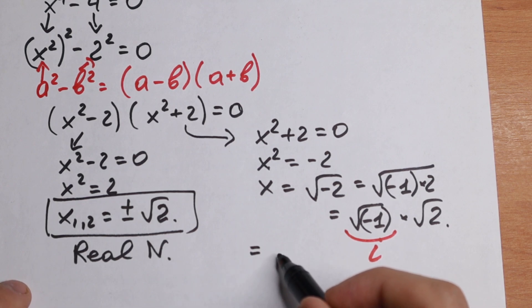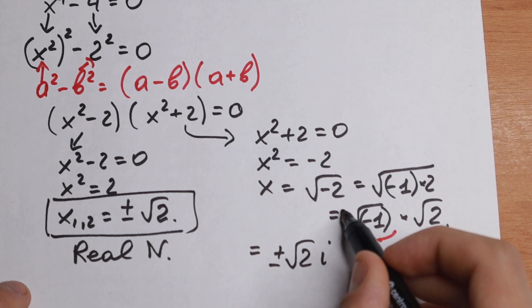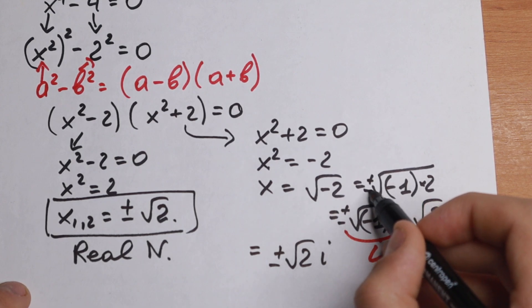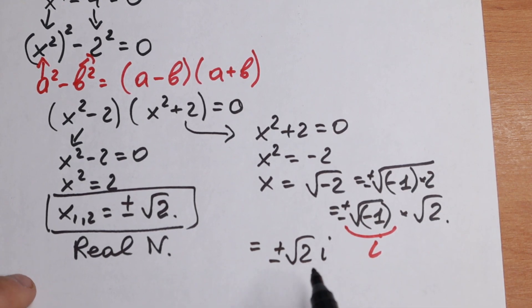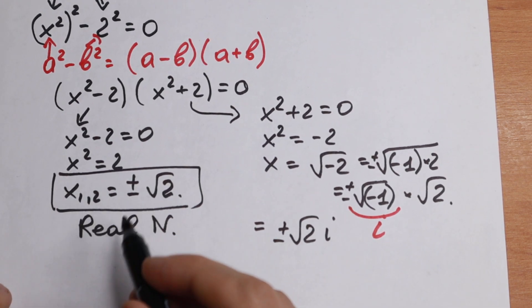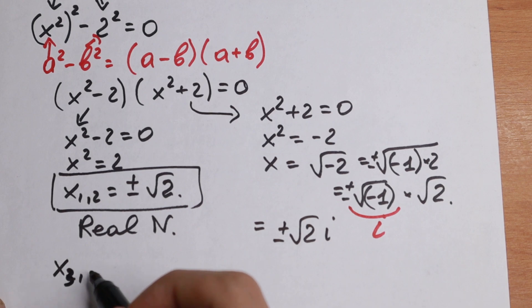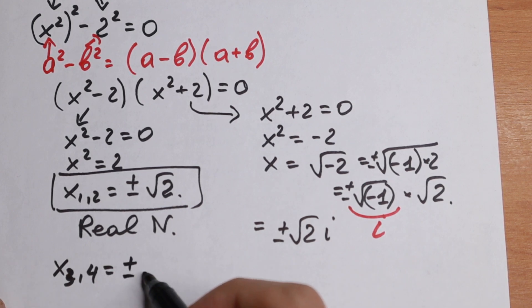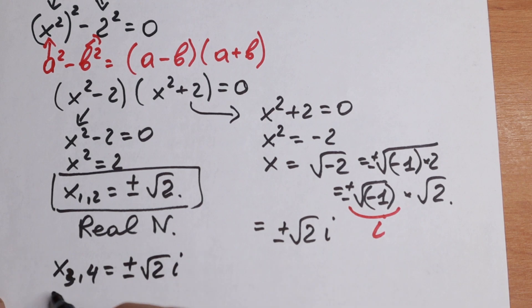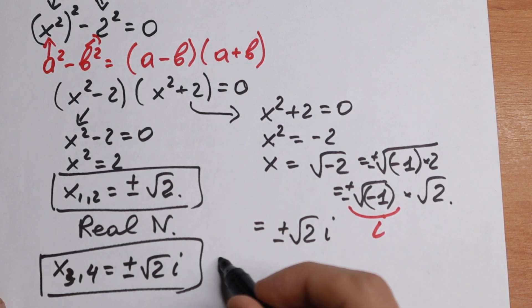We will have plus minus square root of 2 times i. And of course plus minus in every step. So as a result these two are in real numbers. And x3 and x4, we will have plus minus square root of 2 times i. These are roots in complex numbers.